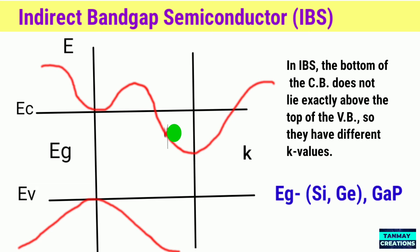A photon of energy EG, where EG is the band gap energy, can produce an electron-hole pair in a direct band gap semiconductor quite easily because the electron does not need to be given any momentum. However, an electron must also undergo a significant change in its momentum for a photon of energy EG to produce an electron-hole pair in an indirect band gap semiconductor.